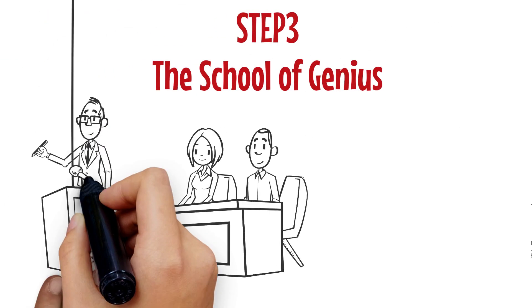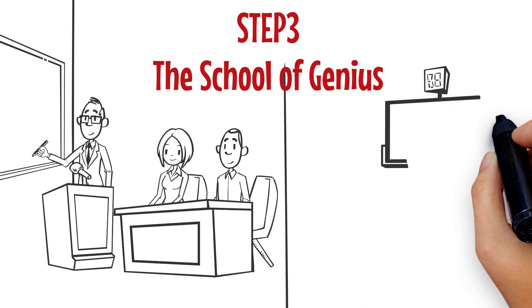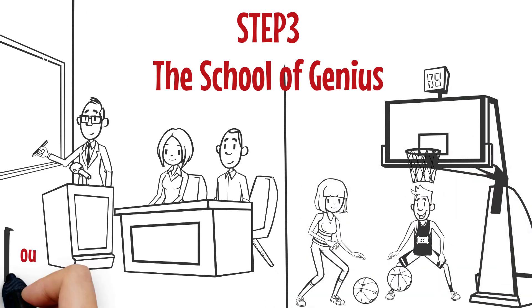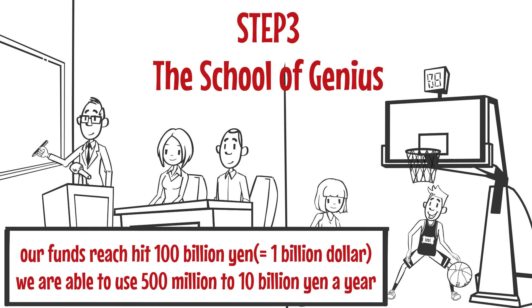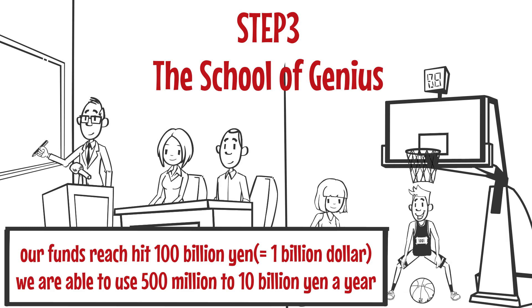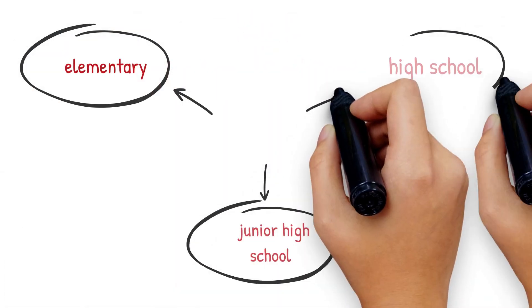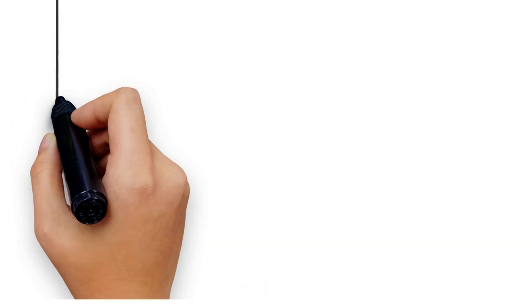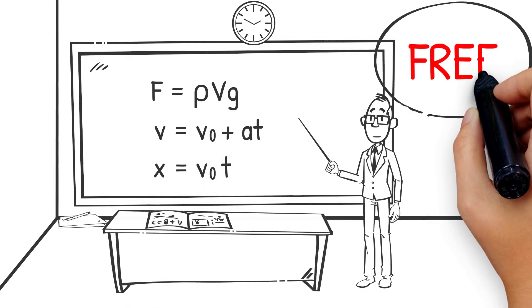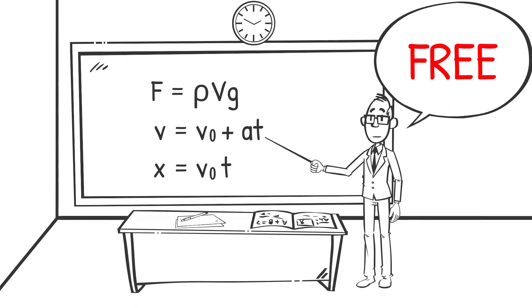Step three, we will create the School of Genius, a school that will educate and bring up geniuses who will save the world. Once our funds hit 100 billion yen, we will be able to use 500 million to 10 billion yen a year. At this school, we will provide elementary, junior high school, and high school education all for free. We will make a school where children of all financial backgrounds can receive top-notch education for free.